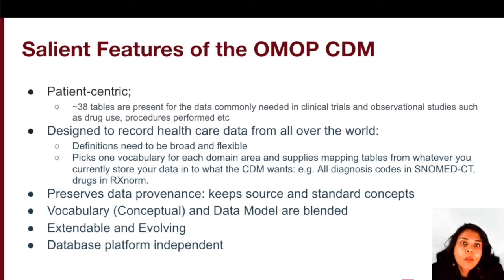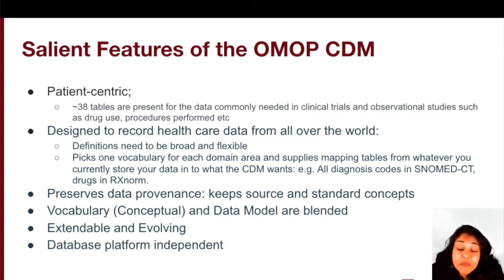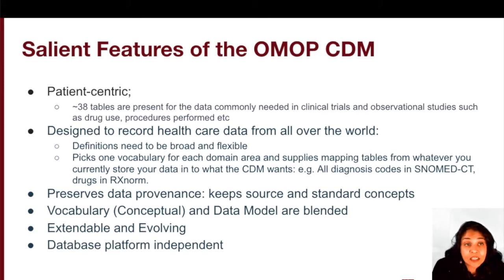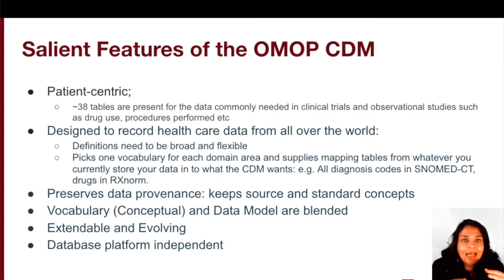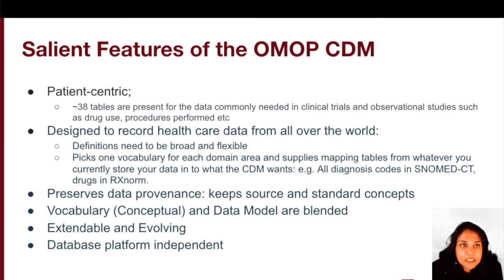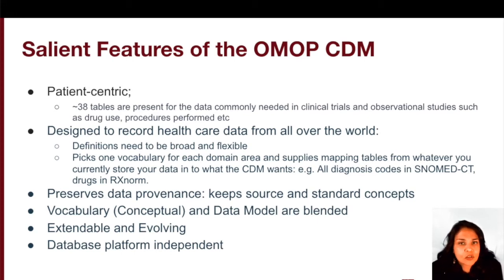So, the salient features of the OMOP CDM. One really important feature to always be aware of is that it's patient-centric. What that means is only records of clinical events that actually happened make it into the OMOP CDM. The OMOP CDM does not contain records of things like missing labs or canceled appointments — those events do not make it in. It has about 38 tables, and these tables contain the data typically needed in clinical trials and observational studies. You have a table for drug use, a table for procedures, and a table for conditions.